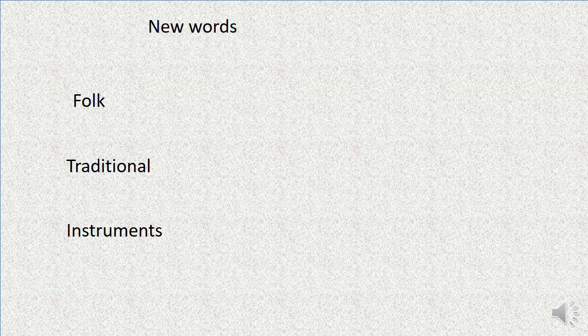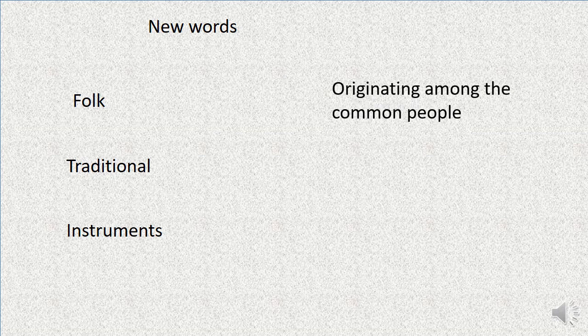The first word is 'folk.' Folk is a noun which means common people of a region. The next term is 'folk song,' which refers to the music of a nation, especially with a distinctive culture. When used in 'folk song' or 'folk culture,' folk becomes an adjective meaning originating among the common people.